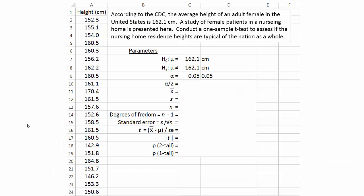This screenshot is from a one sample t-test I did using Microsoft Excel, and we're testing the following scenario. According to the Centers of Disease Control, the average adult height of women in the United States is 162.1 centimeters. In a study of adult patients in a nursing home, the heights were measured. We're going to conduct the one sample t-test to assess if the nursing home residence heights are typical of the nation as a whole.